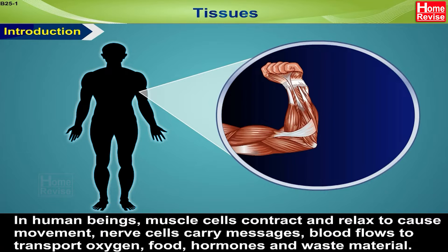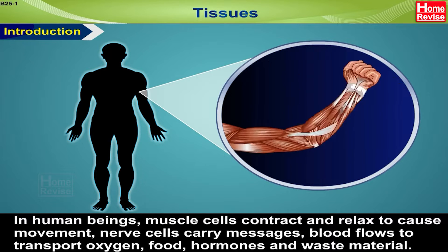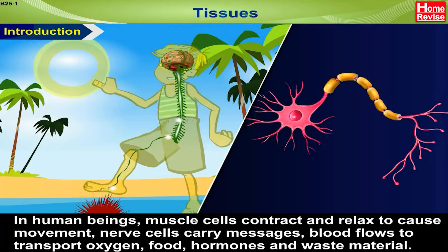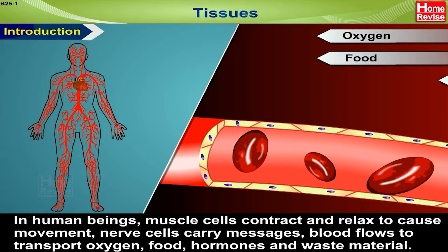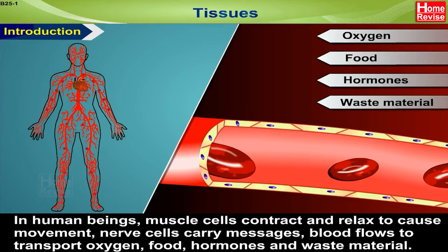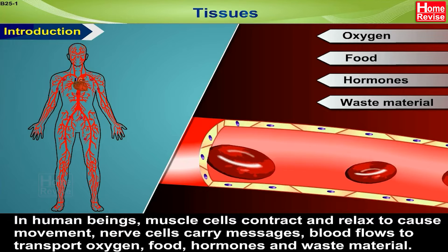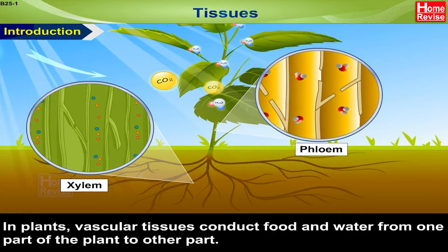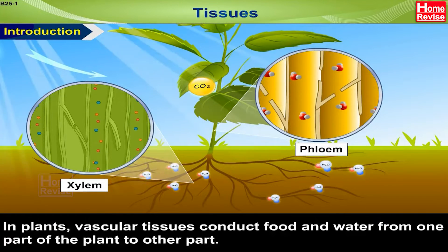In human beings, muscle cells contract and relax to cause movement. Nerve cells carry messages. Blood flows to transport oxygen, food, hormones, and waste material. In plants, vascular tissues conduct food and water from one part of the plant to the other.